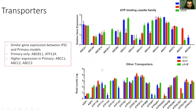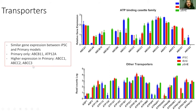In terms of transporters, we also see a very similar expression between the IPSC and the primary model. The main differences are ABCB11 and ATP12A, which are uniquely expressed by the primary, and a slightly higher expression in ABCC1, ABCC2, and ABCC3.